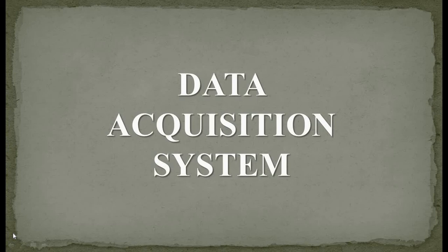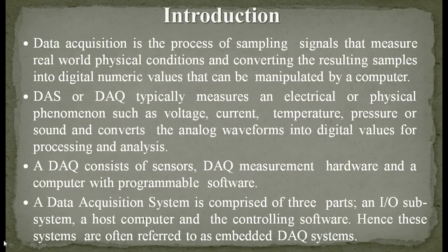Hello everyone, today we will discuss data acquisition systems which we are going to use in automation regarding mechatronics systems. Data acquisition is the process of sampling signals that measure real-world physical conditions and converting the resulting samples into digital numeric values that can be manipulated by a computer. In short, we take the physical changes in the system using sensors and convert them into digital form.